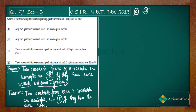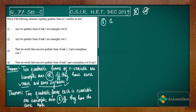Option three says there are exactly three non-zero quadratic forms of rank less than or equal to three, up to isomorphism over ℂ. 'Up to isomorphism' means we are counting all quadratic forms that are not isomorphic to each other. For example, if we have a collection of 10 elements, 'up to isomorphism' means finding all elements that are mutually non-isomorphic — it is possible that only one representative exists and all others are isomorphic to it.